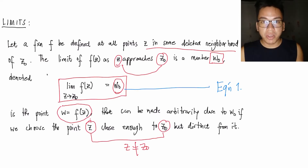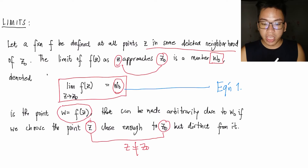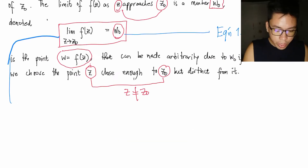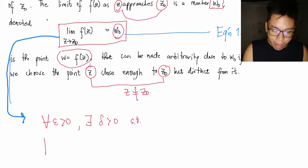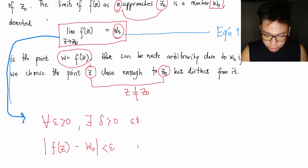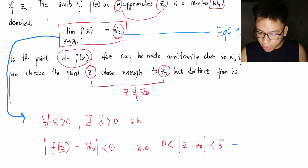If you notice, I already have a video uploaded about limits of functions, but those deal with real variables. This video is an analog — we're dealing with limits but for functions of complex variables. Equation 1 tells us that for every ε > 0, there exists a δ > 0 such that |f(z) − w₀| < ε whenever 0 < |z − z₀| < δ. We label this as Equation 2.